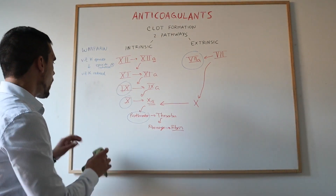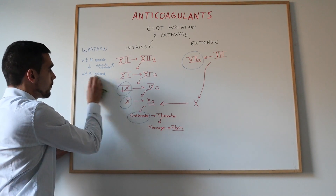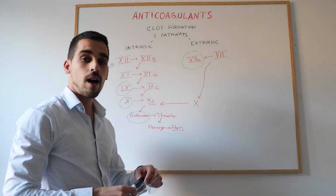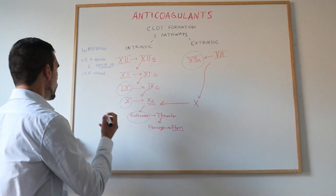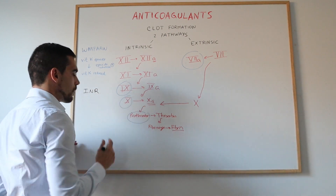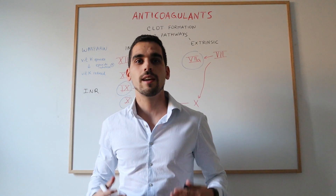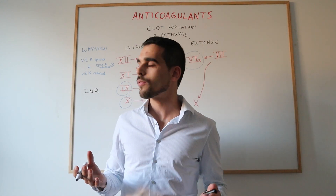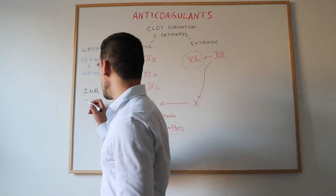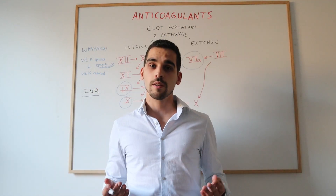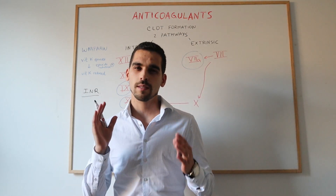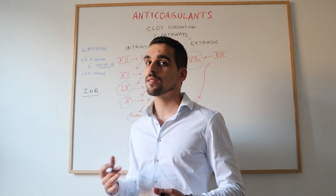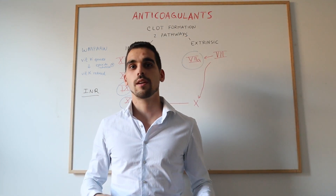Warfarin has a very narrow therapeutic window, so it is really important that the INR is monitored. INR monitoring allows dosage adjustments to balance the risk of bleeding against the risk of clotting. INR targets differ according to the condition being treated, but most of the time the target should be 2.5. If it goes too high, the blood is too thin and we may need to decrease the dosage, and vice versa.